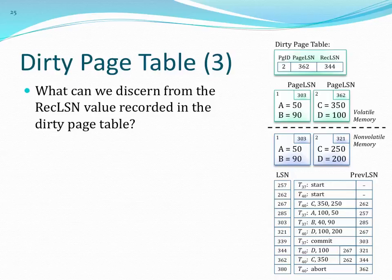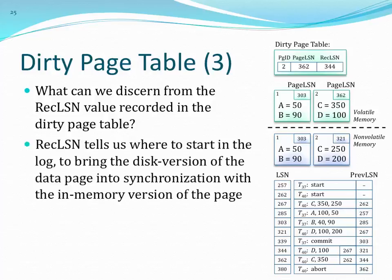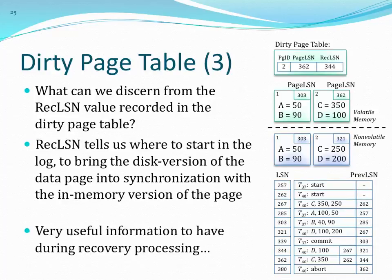The rec LSN in the dirty page table is extremely useful for recovery. It's the furthest back we have to go to undo changes in that page. With 15 pages in the dirty page table, we look for the smallest rec LSN value — that's the furthest back we have to go for undo across the entire database. Any write-ahead log records before the oldest rec LSN can be discarded since those changes are already reflected in the pages on disk.